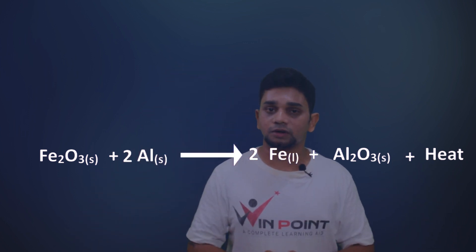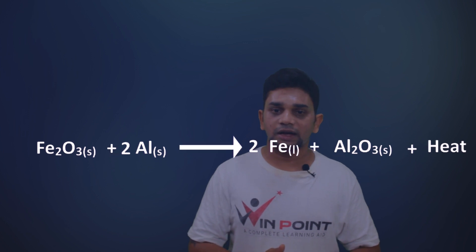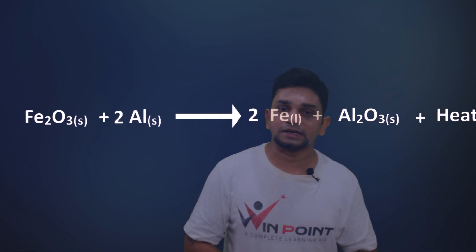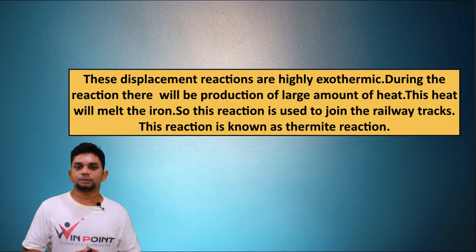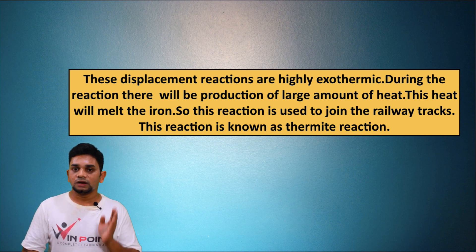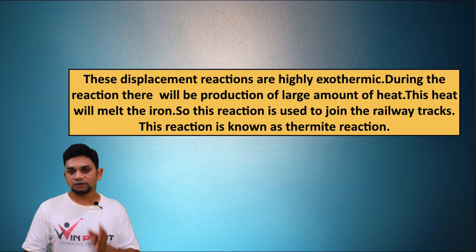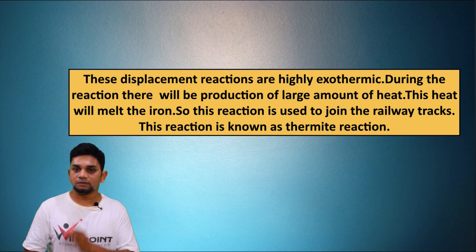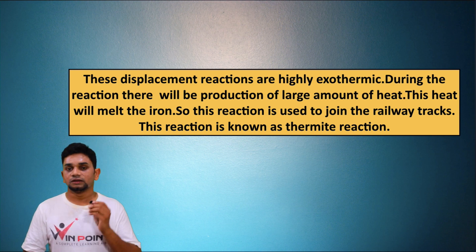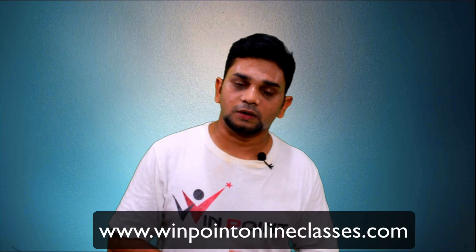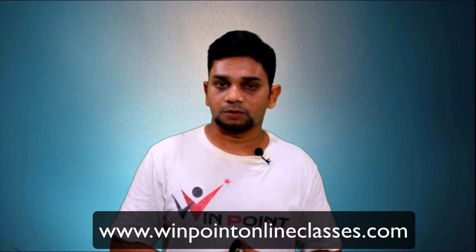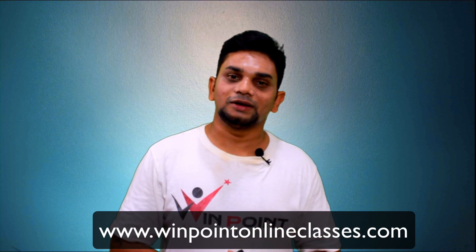The balanced equation is very important and you need to learn it. These displacement reactions are highly exothermic; the heat produced melts the iron, and this is why the thermite reaction is used to join railway tracks. If you like this video please subscribe to my channel and visit our website. Thanks for watching.